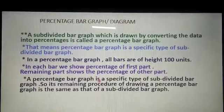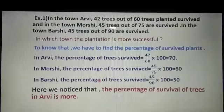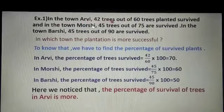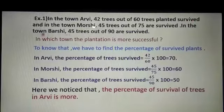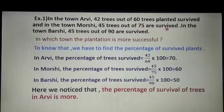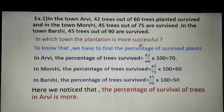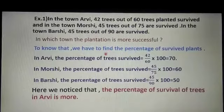Now we will see one example from your textbook, page number 72. In the town R.V., 42 trees out of 60 trees planted survived. In the town Morshi, 45 trees out of 75 survived. In the town Barsi, 45 trees out of 90 survived. We have to find in which town the plantation is more successful, so we need to find the percentage of survived plants.